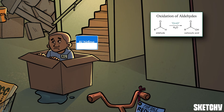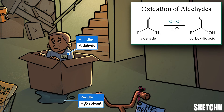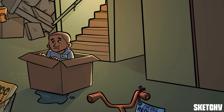Speaking of aldehydes, here's another person named Al who's also hiding — what are the odds! This Al is here to let you know that aldehydes themselves can be oxidized by chromium reagents. As long as some water is around, the product will be a carboxylic acid — like this cardboard box. The puddle is there to remind you that water is needed for this oxidation process.